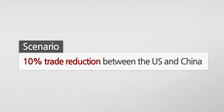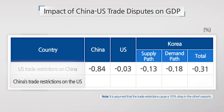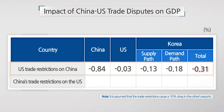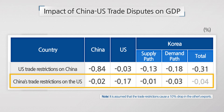Based on these results, further analysis was conducted on the impact of a China-U.S. trade dispute on Korea, assuming that the trade between the two countries dropped by 10 percent. The results reveal that a 10 percent drop in China's exports to the U.S. due to trade restrictions cuts China's GDP by 0.84 percent, the U.S. by 0.03 percent, and Korea's by 0.31 percent, making the demand path more vital than the supply. On the other hand, a 10 percent drop in the U.S. exports to China will have a weaker effect, cutting Korea's by 0.04 percent.